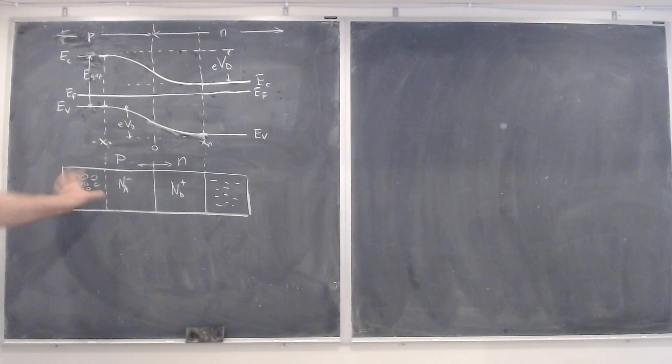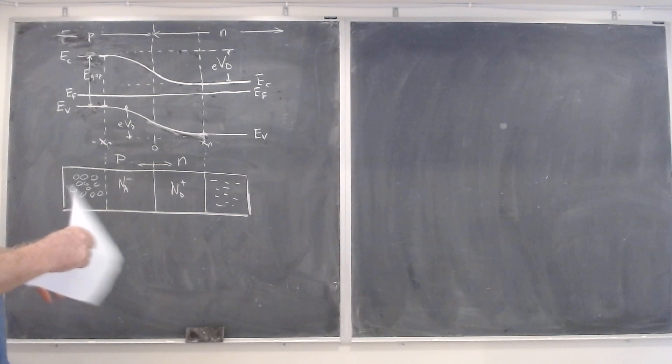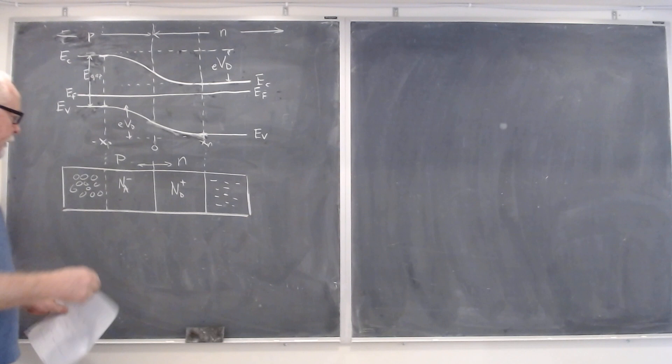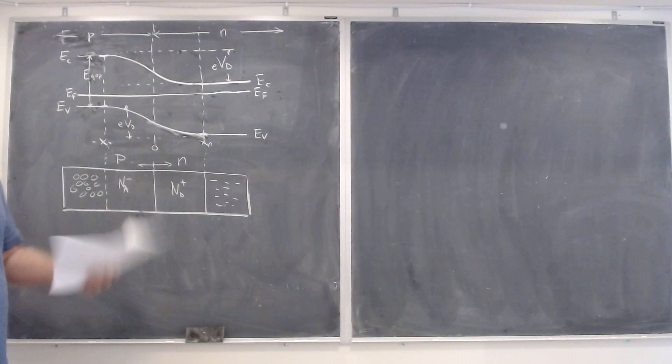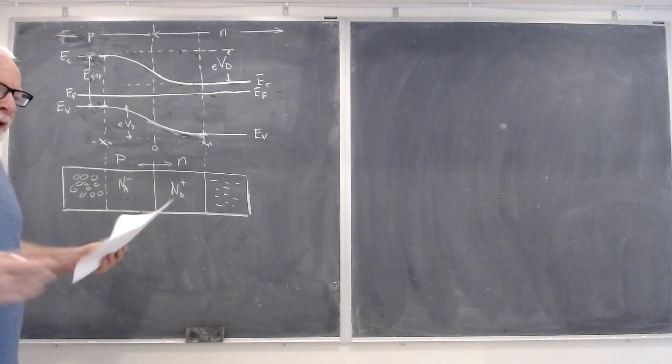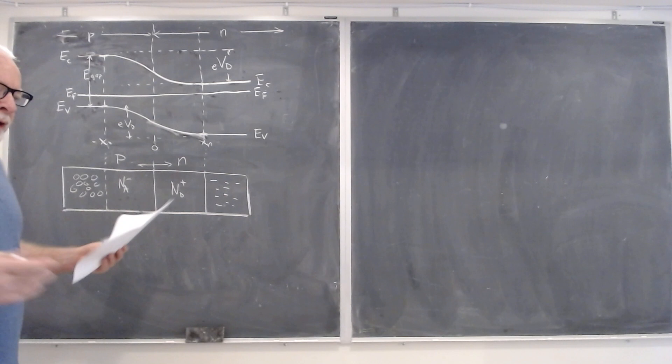When you brought them together, the holes in the P side and the electrons sort of go toward each other and annihilate each other, leaving behind these space charge layers. Because the acceptors are negatively charged, they inhibit any further transfer of electrons, and the same thing about the holes going that way, because like charges repel each other. The formation of the space charge layer leads to this equilibrium situation where there is a barrier in place through the space charge that keeps these holes and electrons at bay.